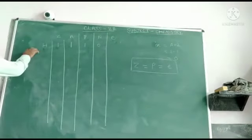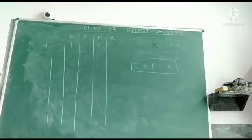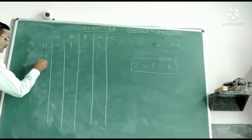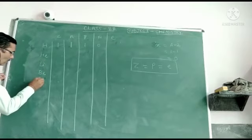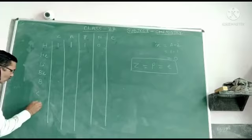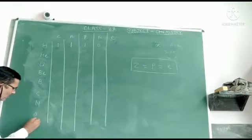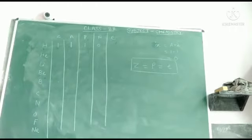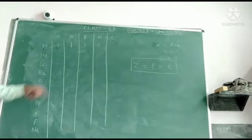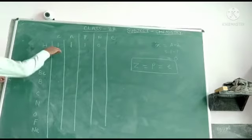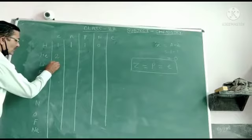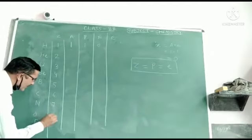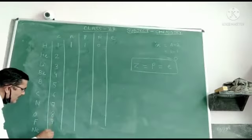Now I will write the symbols of the elements up to element 10. These are: hydrogen, helium, lithium, beryllium, boron, carbon, nitrogen, oxygen, fluorine, and neon. Their atomic numbers are 1, 2, 3, 4, 5, 6, 7, 8, 9, and 10 respectively.